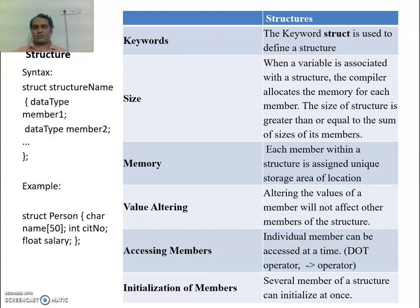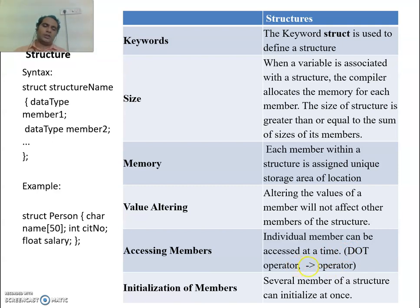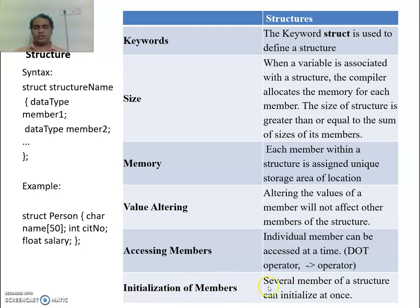How do we access structure members? Individual members can be accessed using the dot operator or the arrow operator. The dot operator is used with a regular structure variable. The arrow operator is used when you are using a pointer to access the members of the structure. Several members of a structure can also be initialized at once.